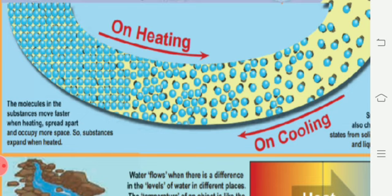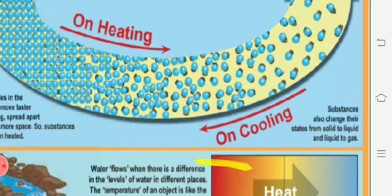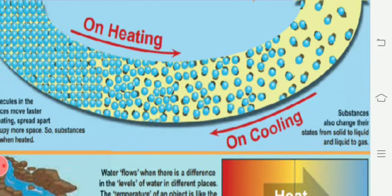Substances expand when heated. The molecules inside the substance move faster when we heat it, and start to spread and occupy more space. Substances also change their states — from solid to liquid and liquid to gas on heating. On cooling, gas becomes liquid and liquid becomes solid.